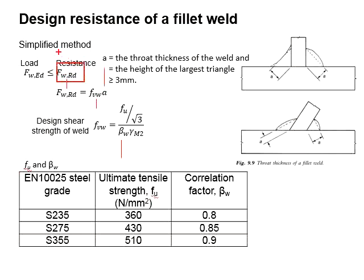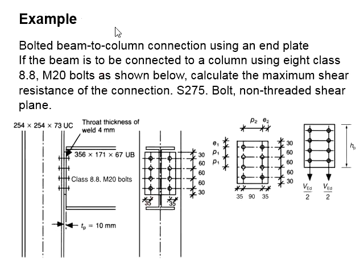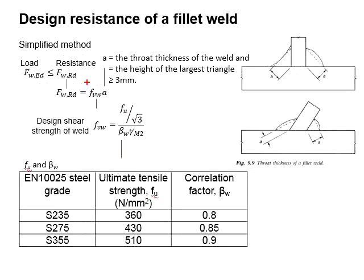FWRD refers to the weld resistance of the connections. The A here refers to the drop thickness, which is given as 4 mm. The FVW refers to the design shear strength of the weld, as given by this formula.